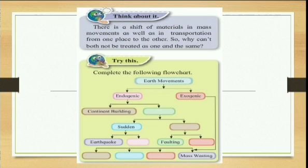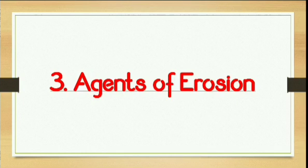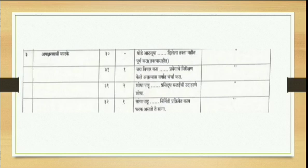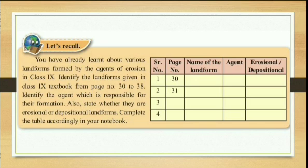Next, there is a flow chart which you have to fill with correct answers — this particular flow chart has been deducted along with its 'Think About It' section. That was all about the second chapter. Now we will look at the third chapter, which is Agents of Erosion. In this chapter, 'Let's Recall' — there is a table of landforms, agents, and erosional and depositional work — which has been eliminated.